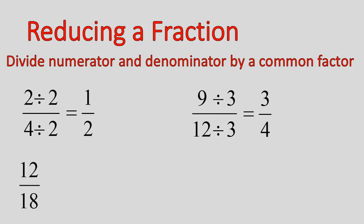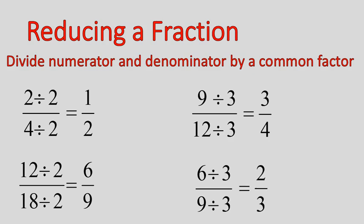Let's try another one. 12 over 18. If you want to pause and try and figure out some factors of 12 and 18, for this activity, I'm just going to go ahead and use the factor of 2. I divide the top and bottom by 2, and that gives me 6 over 9. Now I'm going to take that fraction of 6 over 9, and I know that they are both divisible by 3, so I'm going to divide the top and bottom by 3 to give me 2 over 3, or 2 thirds.